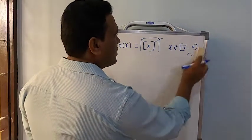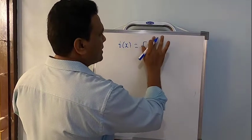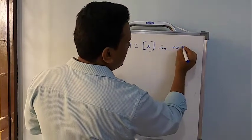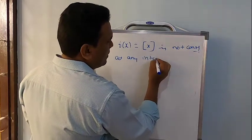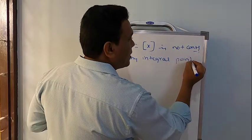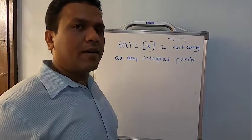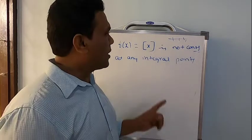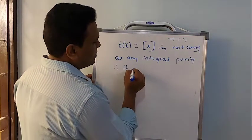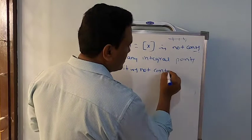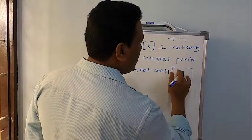So I will just write down the statement. f(x) = greatest integer of x is not continuous at any integral points. Between the integers it is fine — between 1 and 2 it is continuous — but if exactly 1, exactly 2, exactly 3, exactly 4, it is not going to be continuous. So it is not continuous at any integral point. Therefore it is not continuous in the closed interval [5, 9].